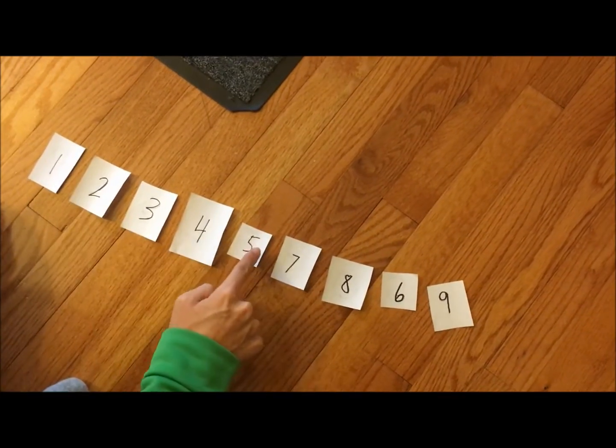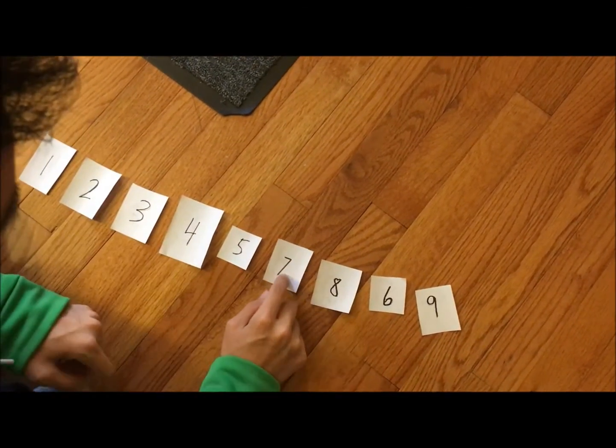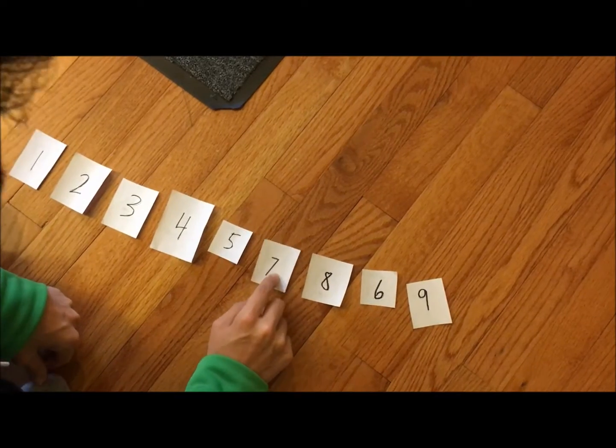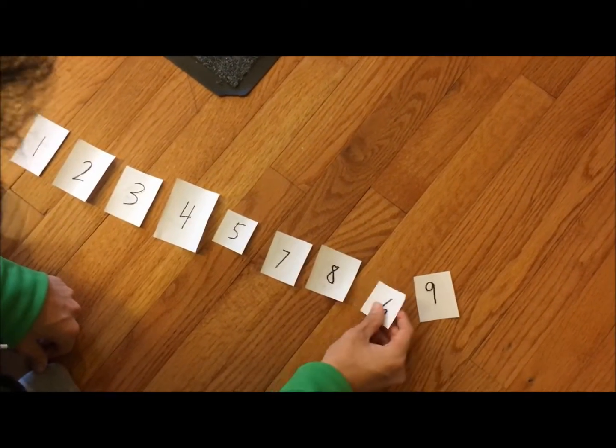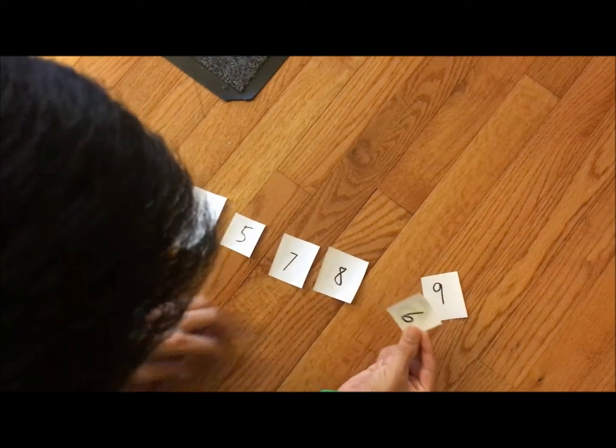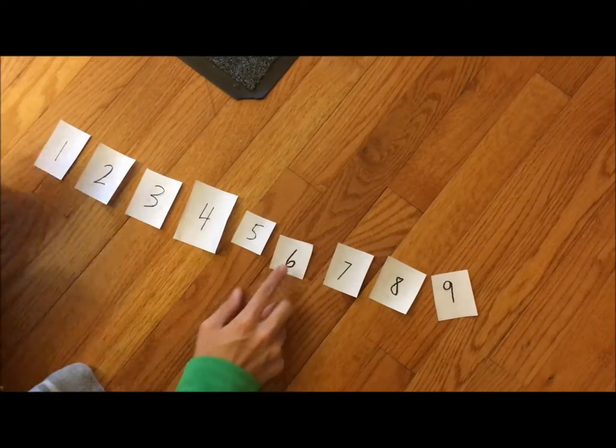And then these five are fine. But then we come to seven, and seven is smaller than eight. That's fine, but then six is even smaller than seven. So we take six and move it over. Now everything is sorted.